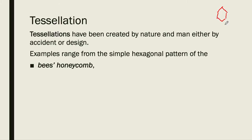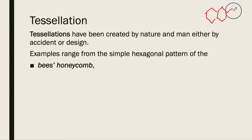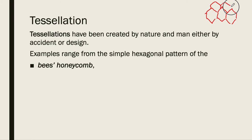So this is a bee's honeycomb, and you can see that it tessellates like this. Then you can see the next batch of honeycomb here, and then so on and so on. So this is one particular example.